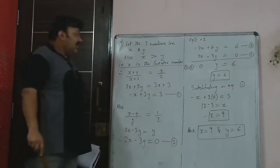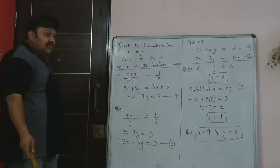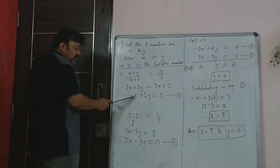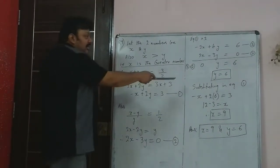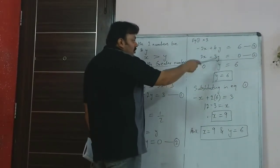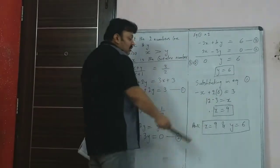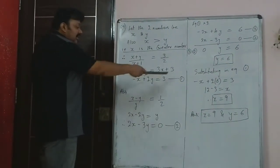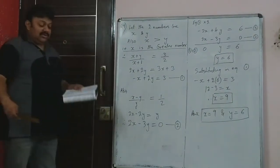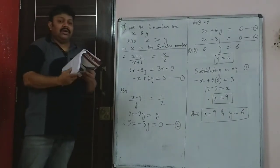Solving equations 1 and 2 by eliminating coefficients: multiply equation 1 by 2 so it becomes minus 2x, and add the two equations. You get y equals 6. Substituting y equals 6 into any equation gives x equals 9. So the two numbers x and y are 9 and 6.